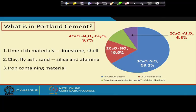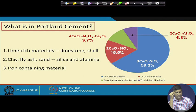We have concrete and asphalt. In terms of concrete, what is cement? The cement is tricalcium silicate, dicalcium silicate — essentially calcium, aluminum, iron, and oxygen. These are the four major components in cement. It is a lime-rich material: limestone, clay, fly ash, sand — those are used for silicon, aluminum, and it also has some iron-containing material. These are the major elements present in Portland cement.